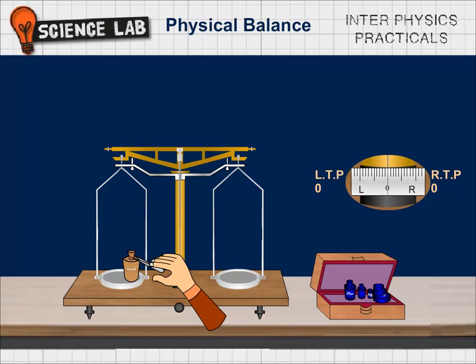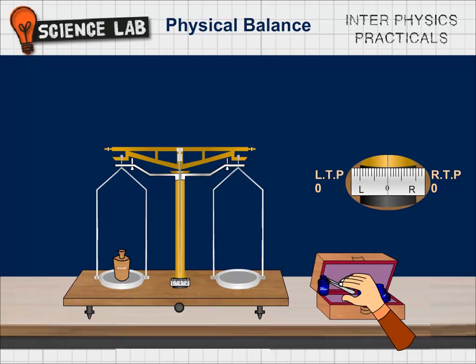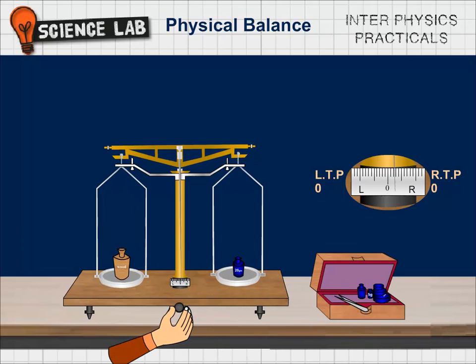To find out the resting point, place the body whose mass is to be determined on the left pan. Add suitable mass to the right pan. Rotate the knob to bring the physical balance to a working condition.